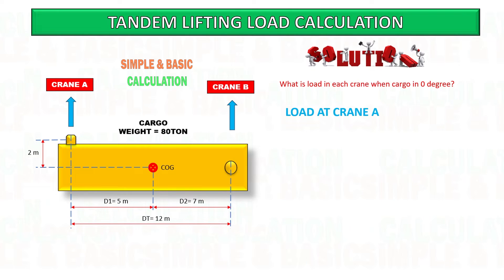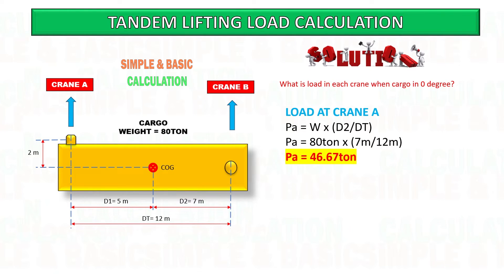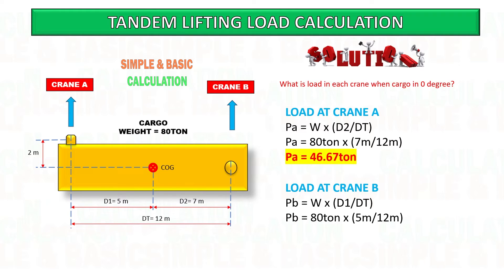See the calculation below — you can pause the video and follow along. Crane A is taking more load because it is closer to the center of gravity of the cargo.